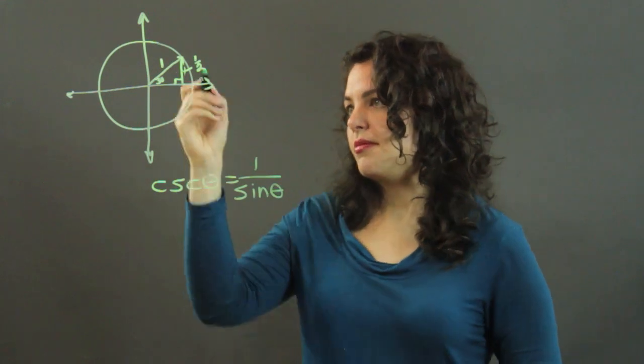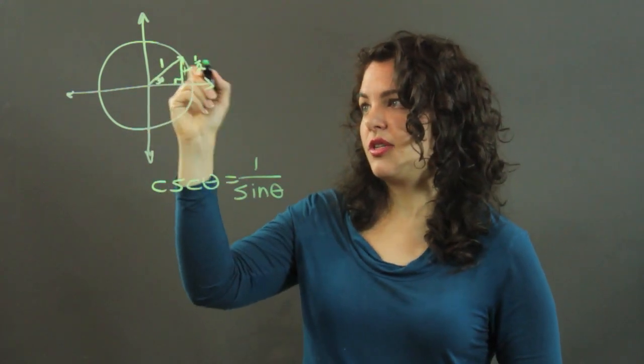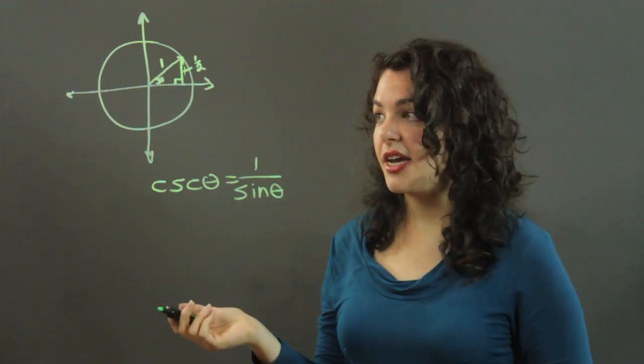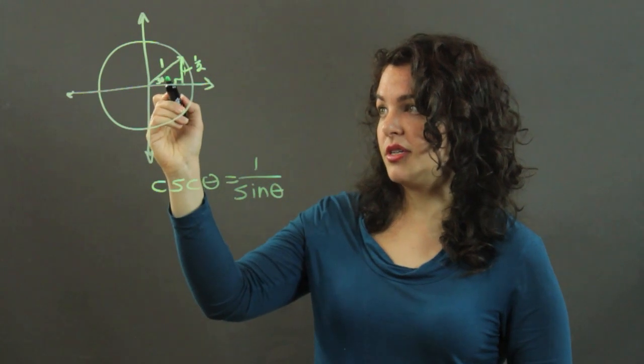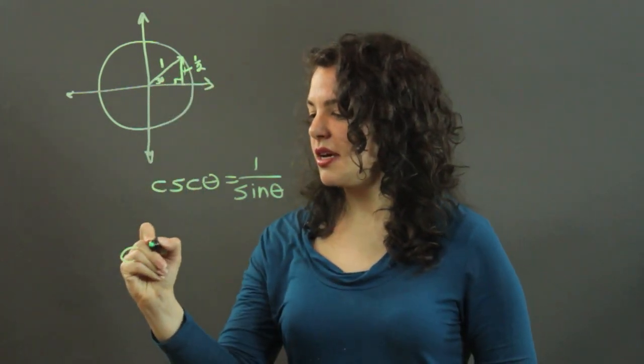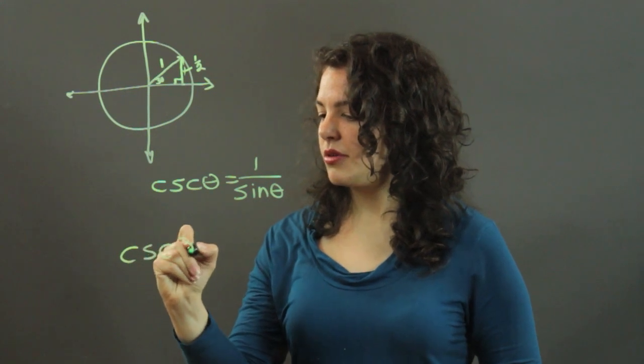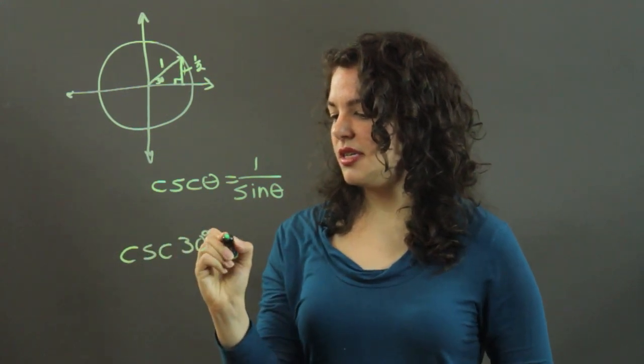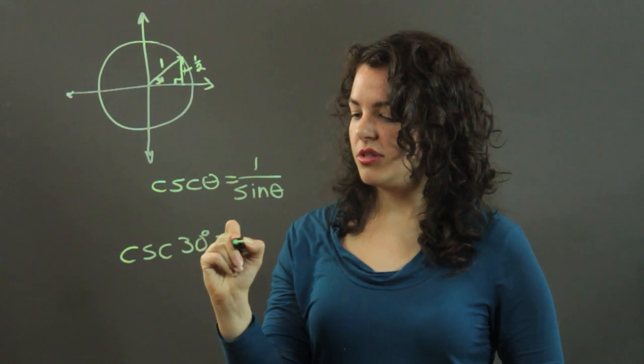So if my sine of 30 degrees is 1 half, then my cosecant of 30 degrees is the inverse of 1 half, which is 2.